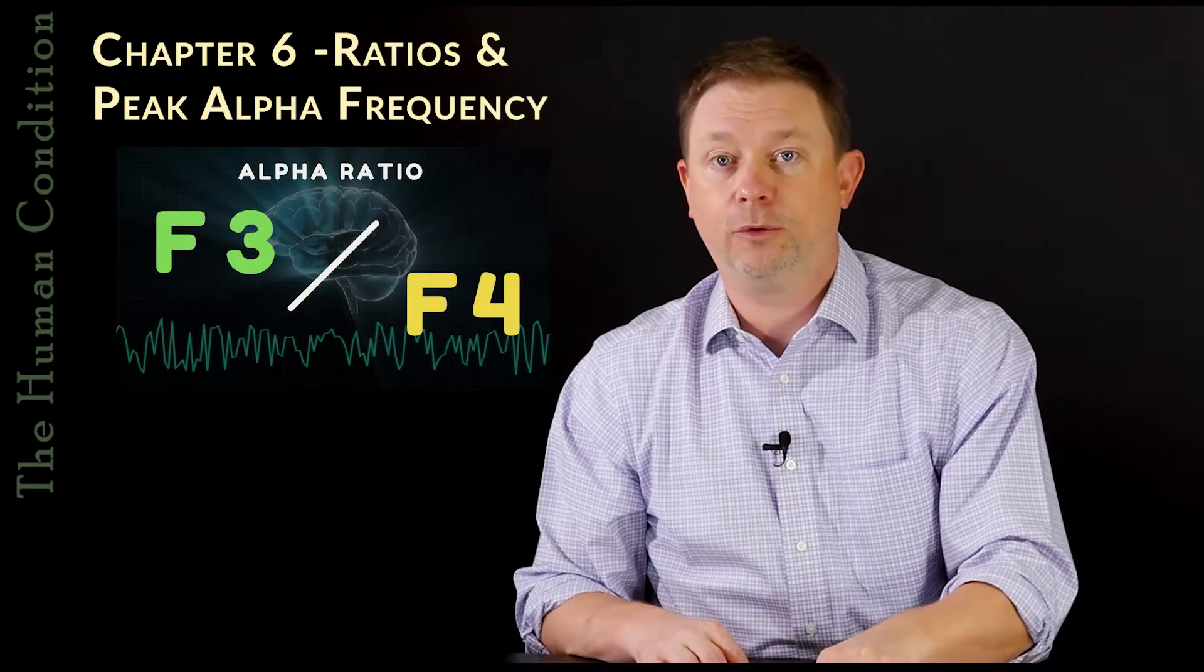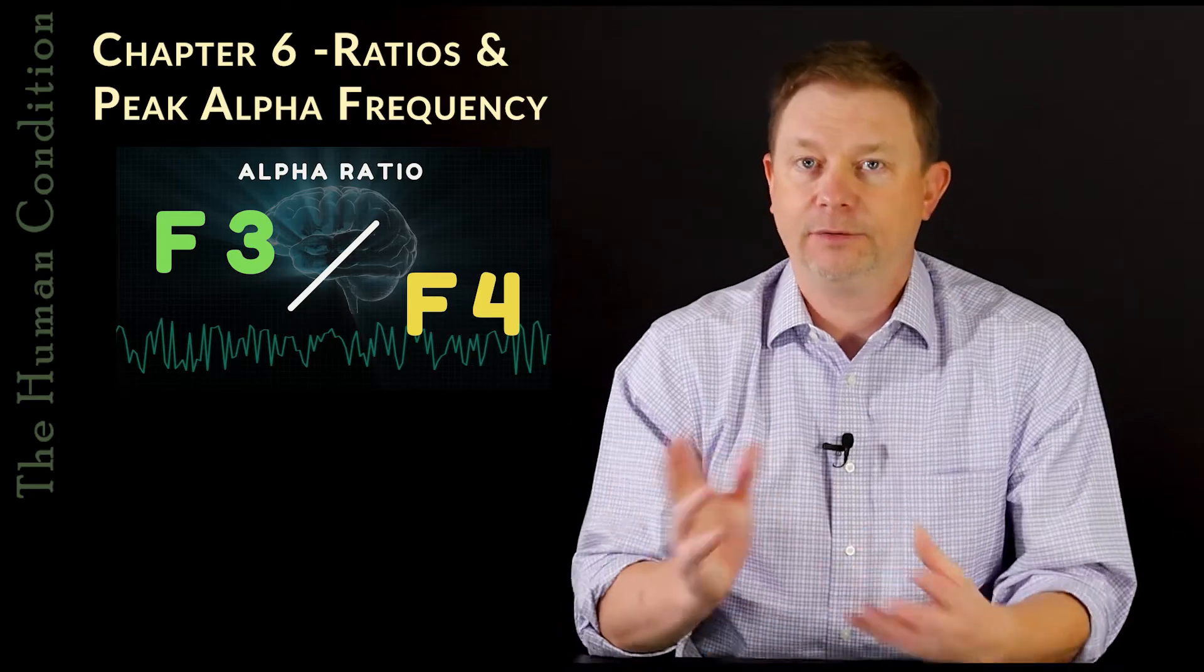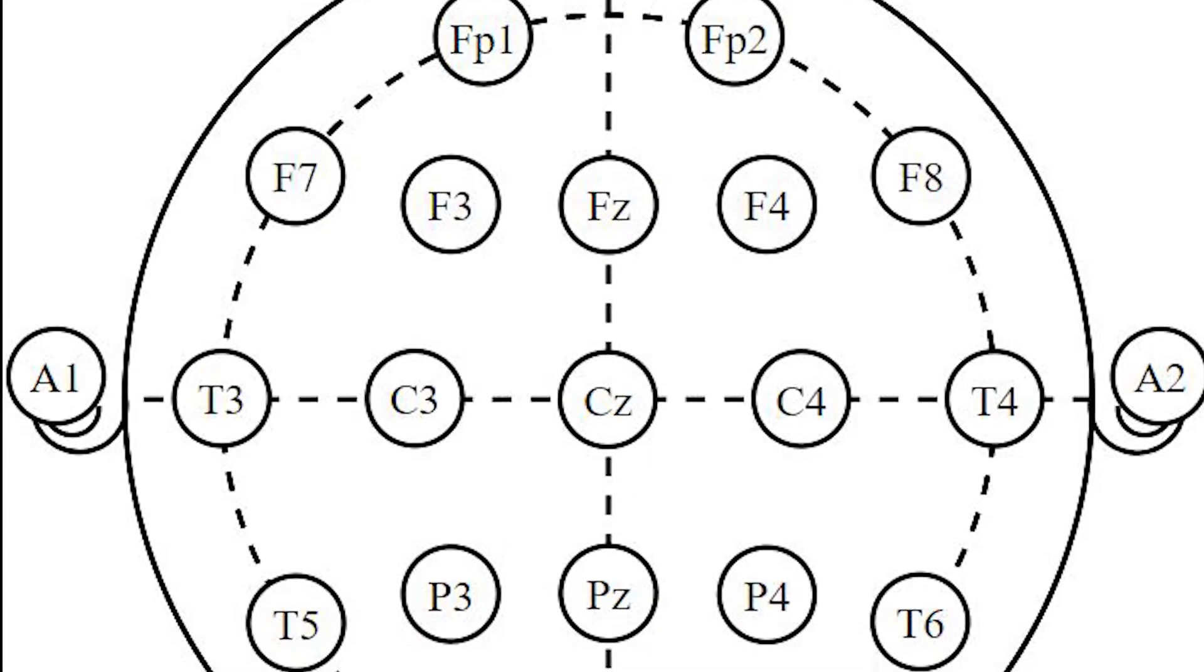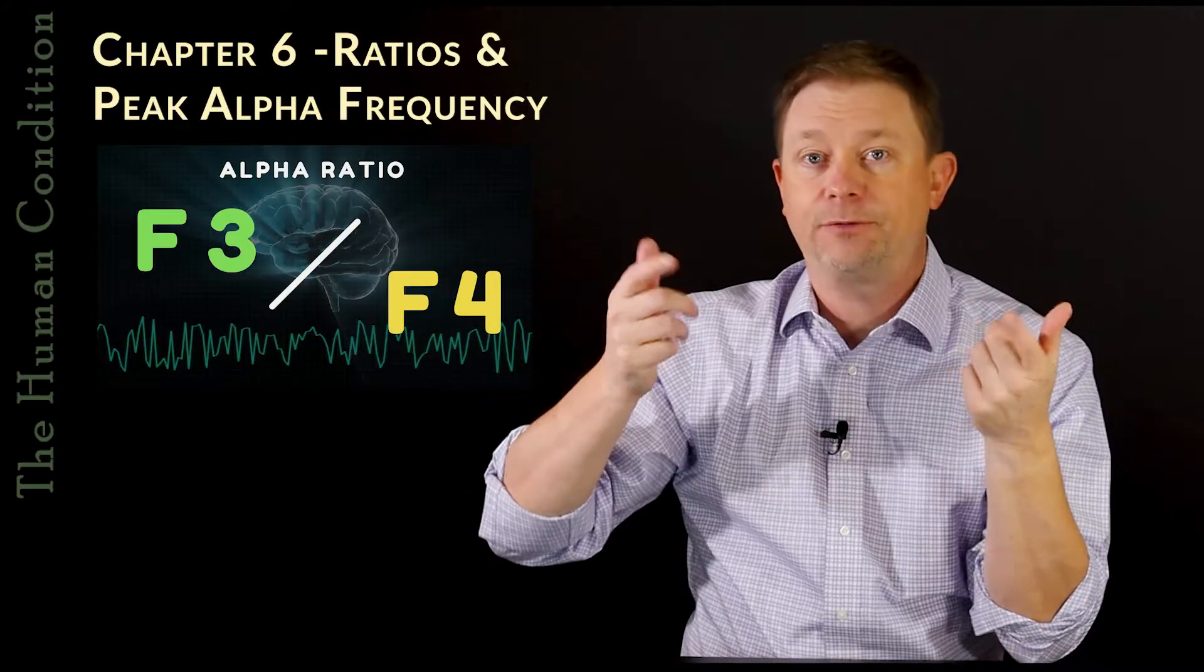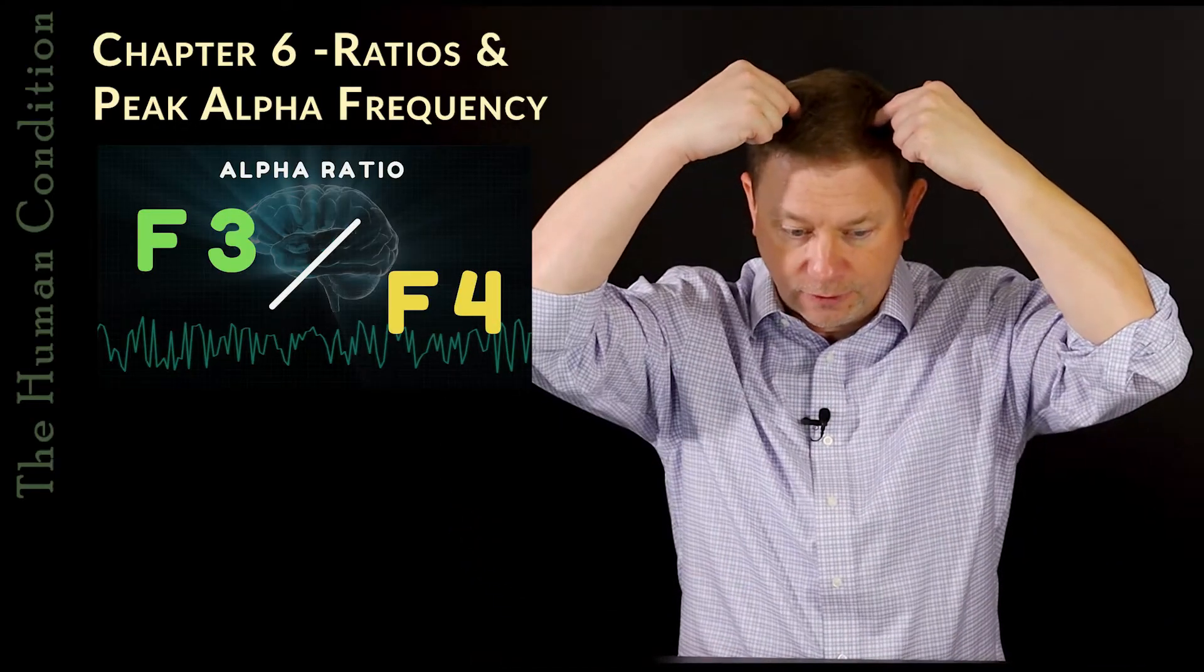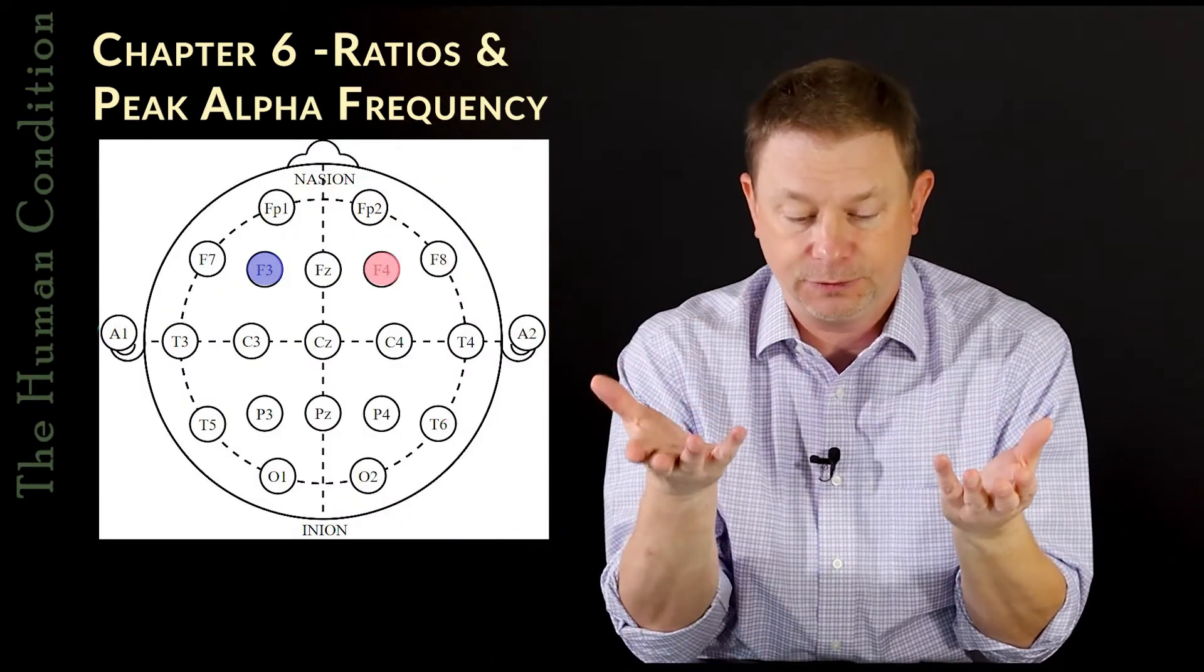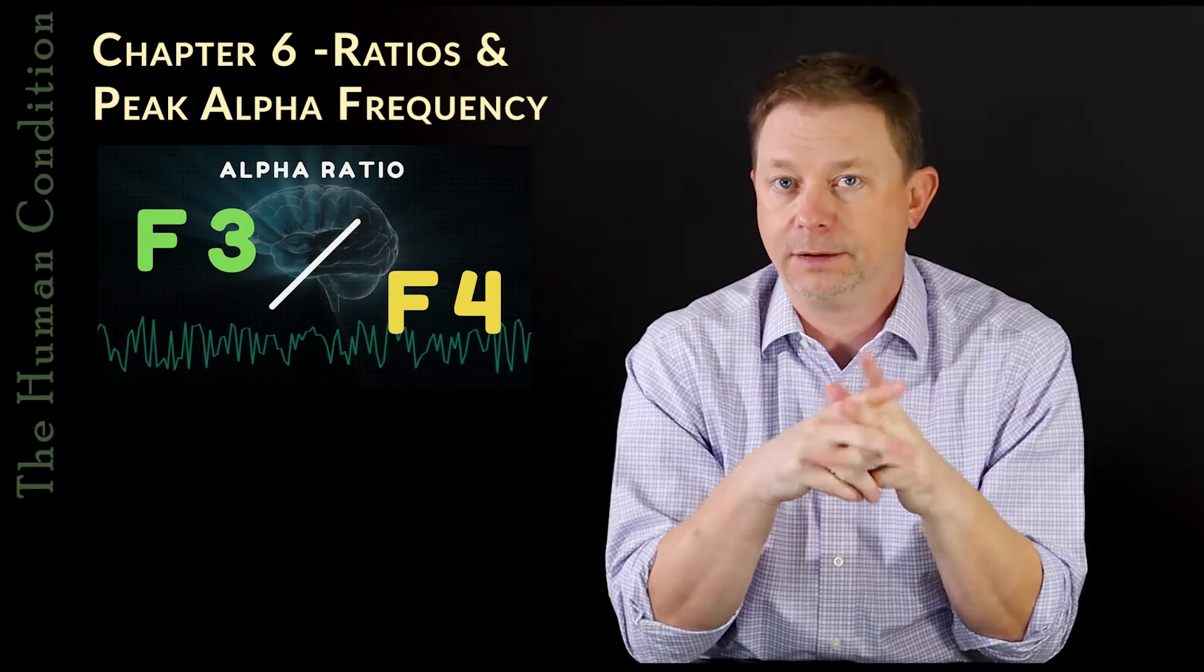The next is the F3 to F4 alpha ratio. That one's a little bit complex because it measures a couple of things. First of all, all the odd numbers on the EEG are on the left side of the head and all the even numbers are on the right side of the head. So F is frontal. F3 and F4 are right about here. So F3 to F4 is basically left frontal, left prefrontal to right prefrontal. And it's a very good measurement for things like depression.